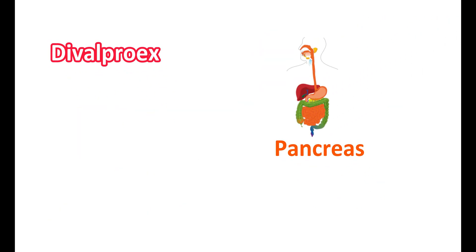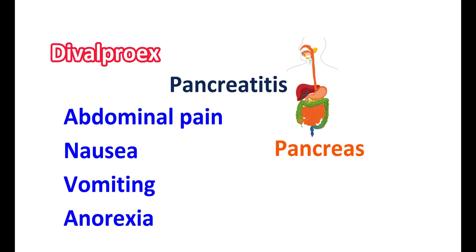Divalproex can also affect the function of the pancreas. In some people, it can produce pancreatitis — inflammation of the pancreas — which may develop shortly after initial use or sometimes after several years of use. Symptoms include severe abdominal pain, nausea, vomiting, and anorexia. A medical examination should be done to check for pancreatitis, and if confirmed, the drug may be discontinued.